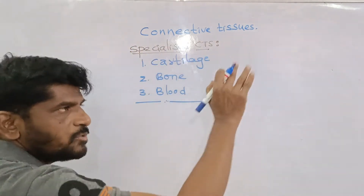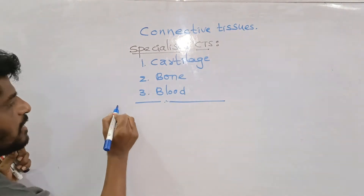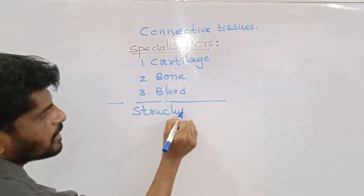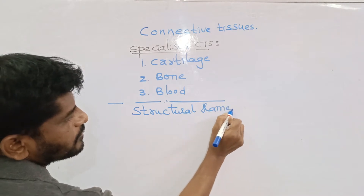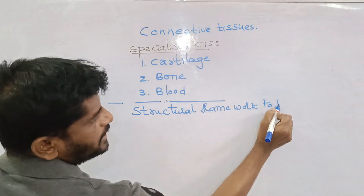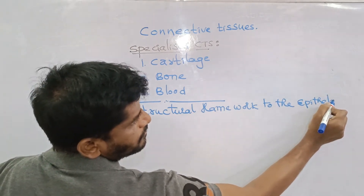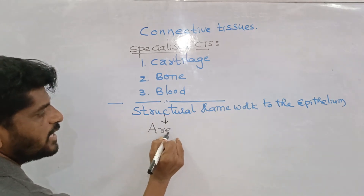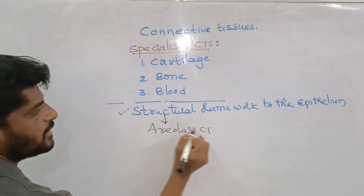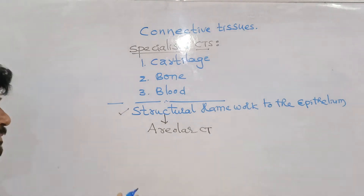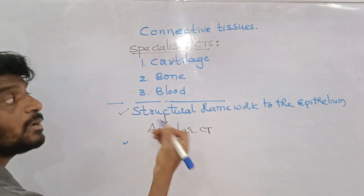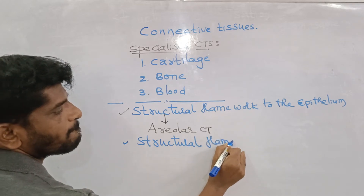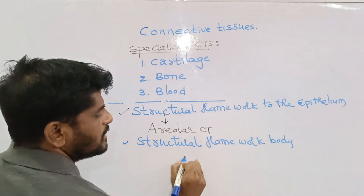Before I start the connective tissues, there are some very important points to remember. There are some connective tissues which form the structural framework. The tissue which forms the structural framework to the epithelium is the areolar connective tissue. The tissue forming the structural framework to the body is the bone.